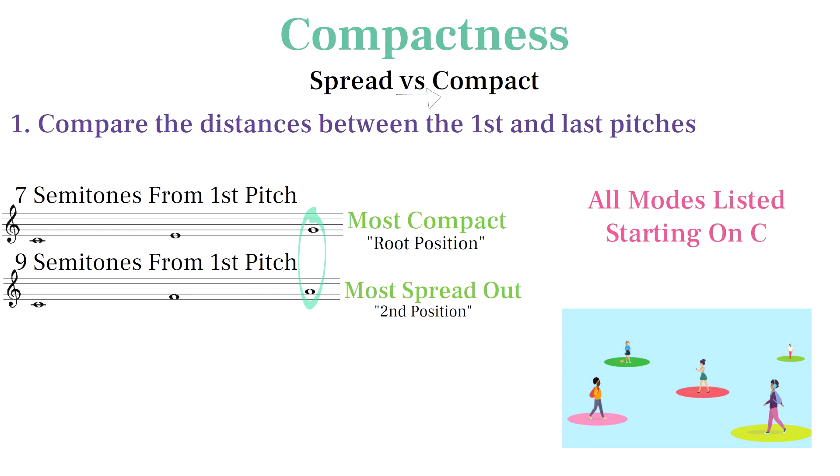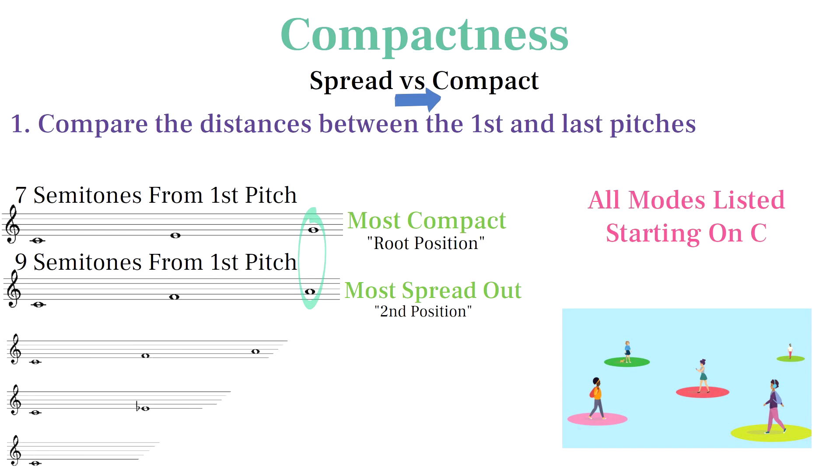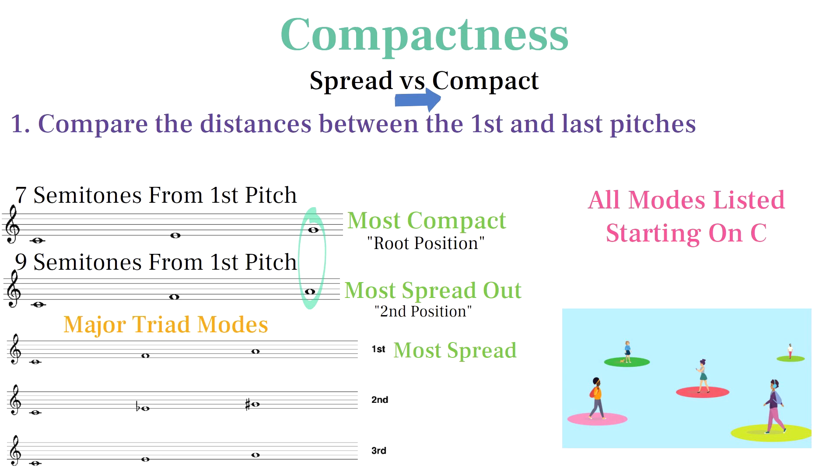In our chart, we list every mode of each set rank ordered from the most spread out to most compact. This means the order of modes for the major triad starts with second position since it's the most spread out, and the root position major triad is ranked third because it's the most compact mode.